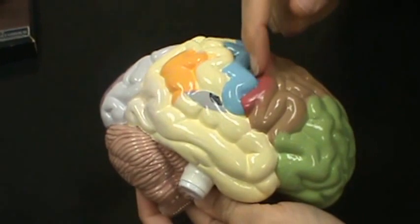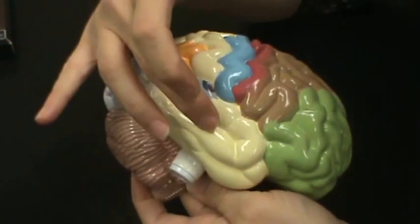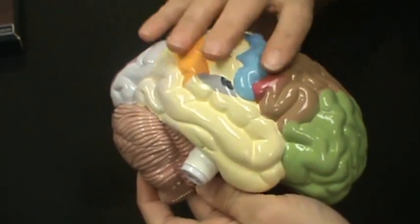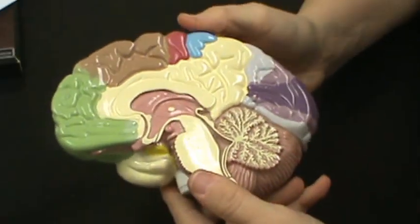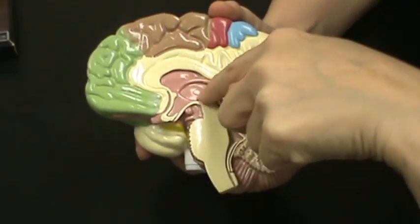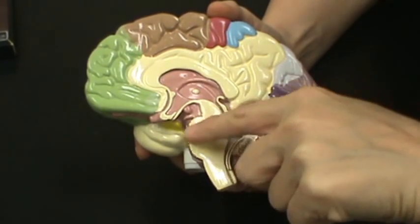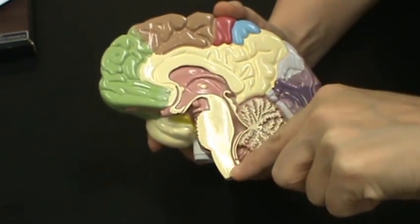This is the central sulcus, frontal lobe, parietal lobe, occipital lobe, temporal lobe. If you turn it over this direction, you can see this right here is the corpus callosum, the circular structure here is the thalamus, then you have the brain stem, midbrain, pons where it gets wider, and medulla.